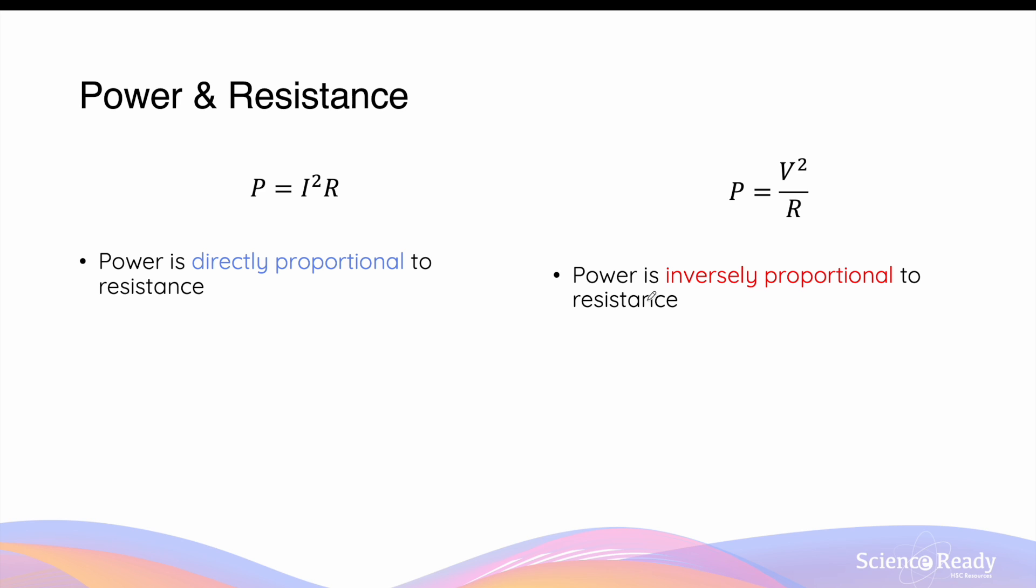How can this be? How can power be directly proportional and inversely proportional to resistance at the same time? Now this is a common confusion among students, so let me explain. This is because the situation in which you use each equation is different.